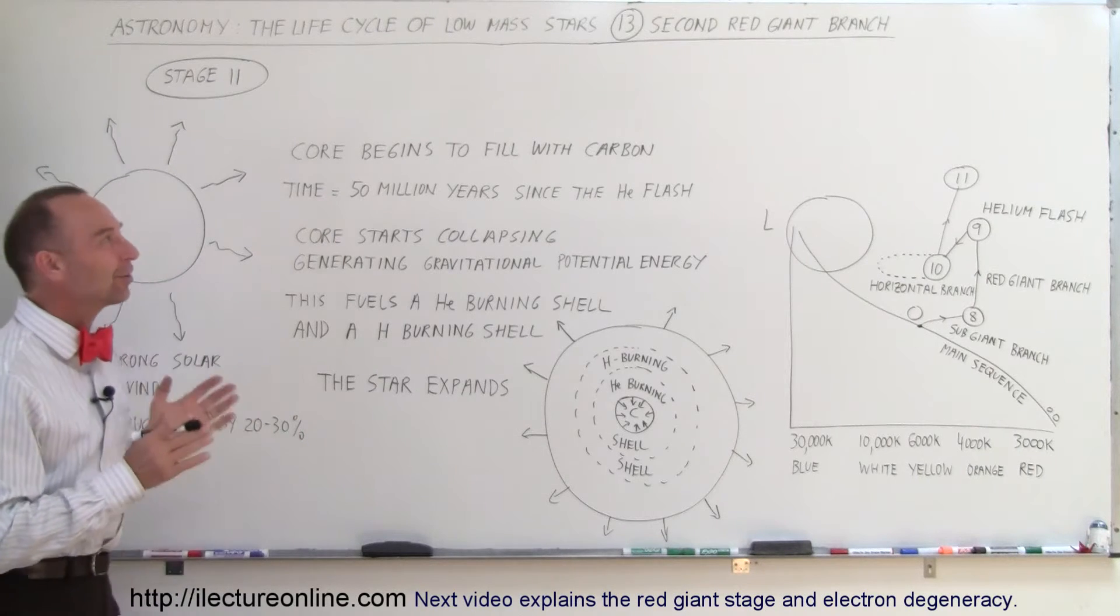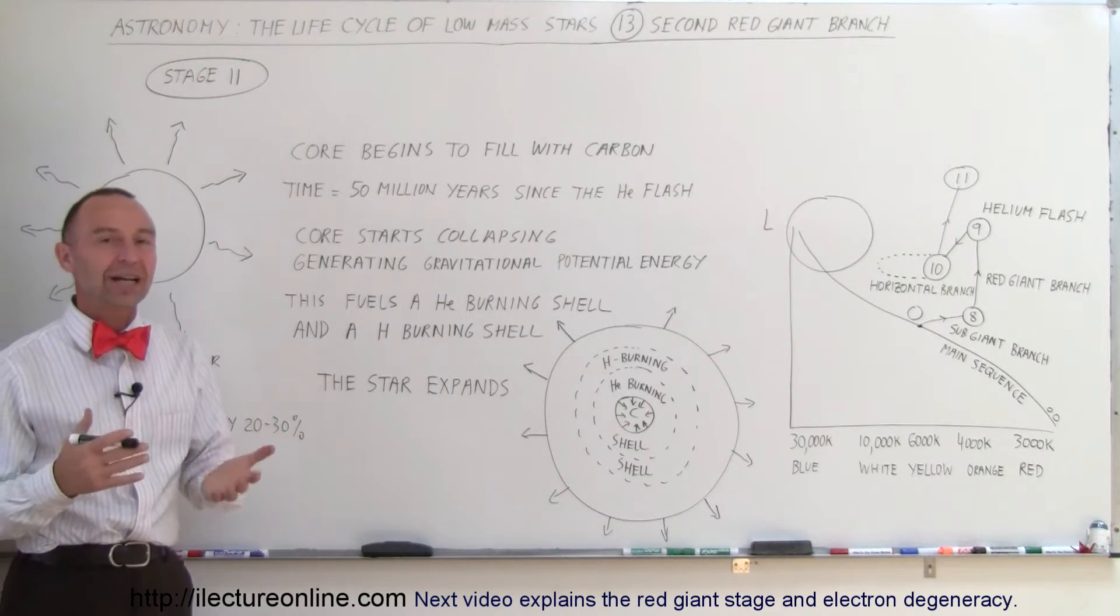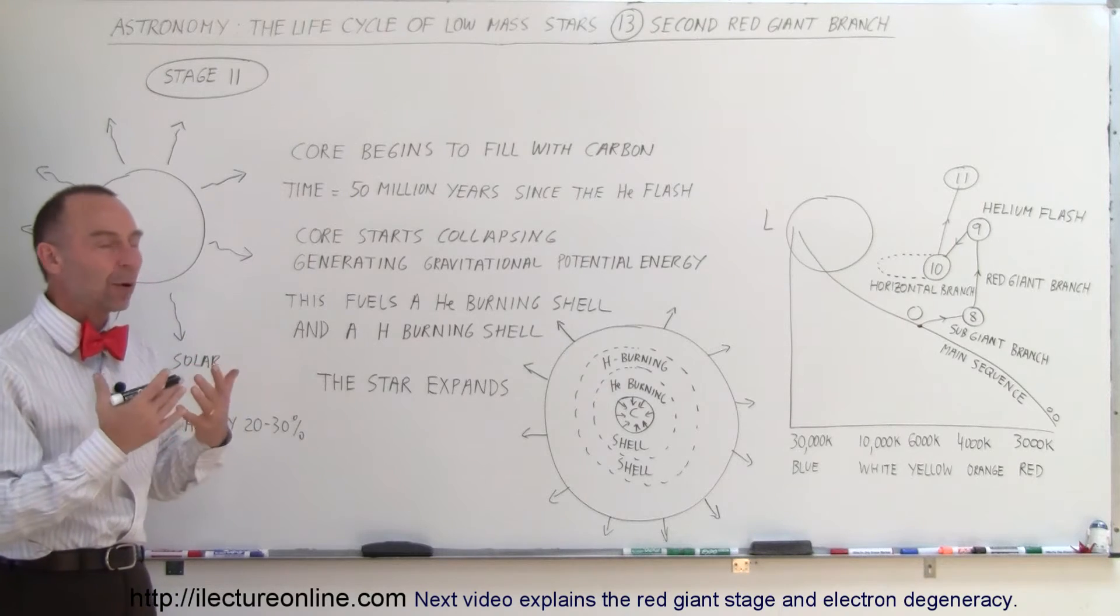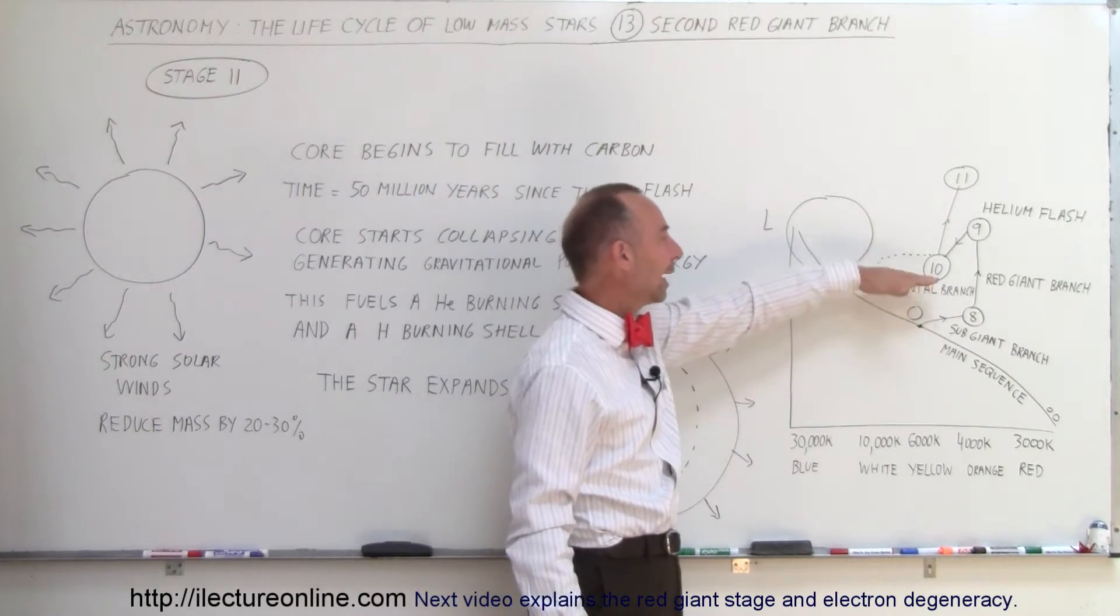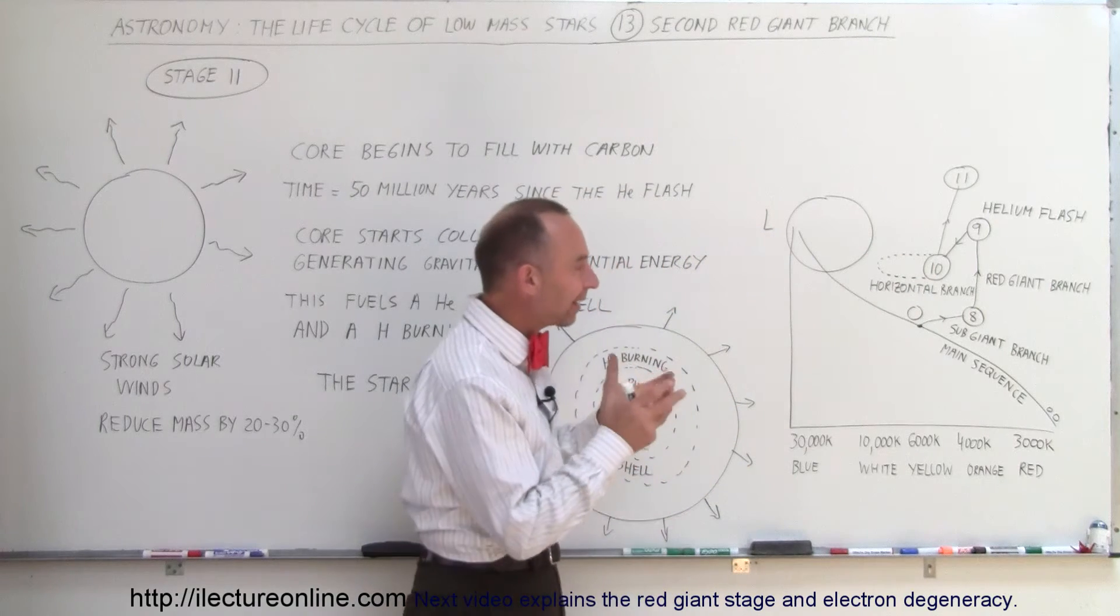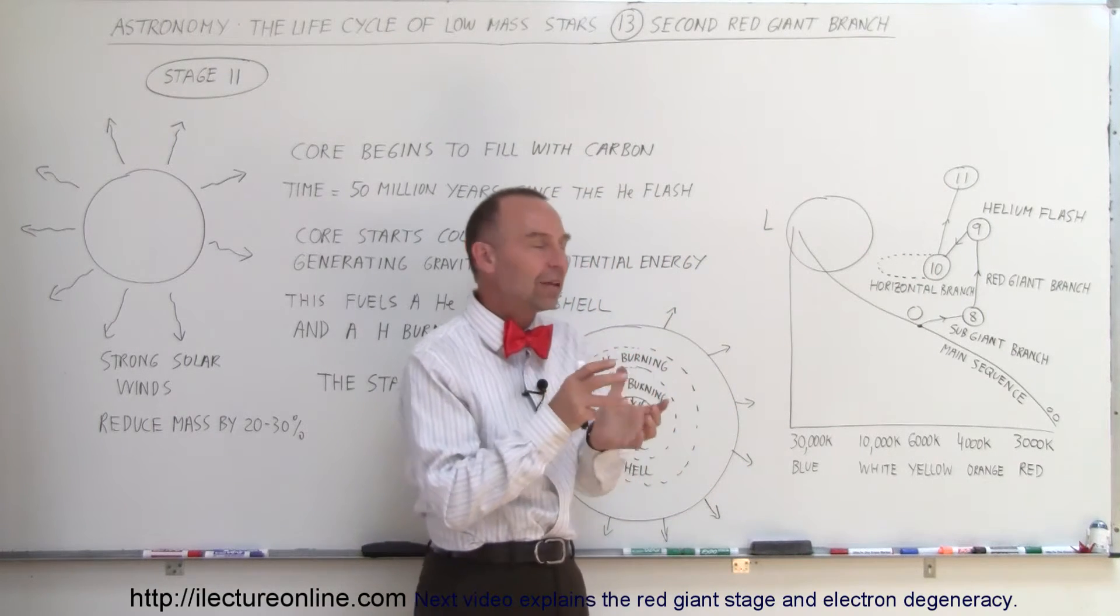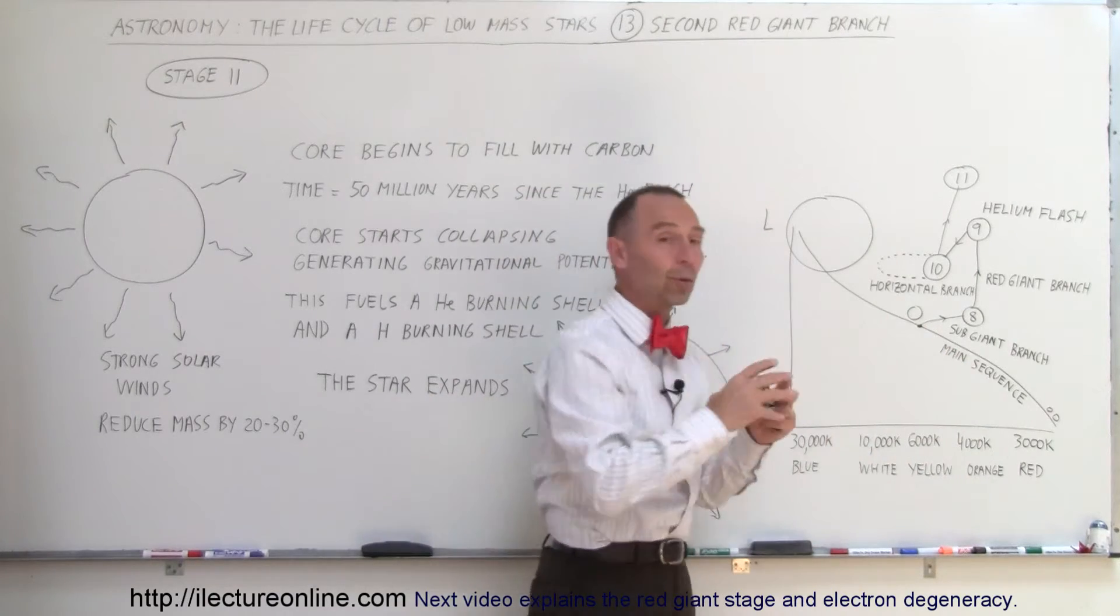Welcome to Electron Line. Now we're going to talk about the second red giant branch. What is taking place now? Well, the star is where we left it off on the last video at the horizontal branch.